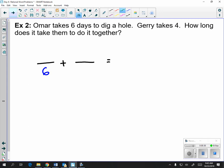Omar individually takes 6. Jerry takes 4. The problem is asking how long does it take for them to do it together. So we're solving for the numerator in this case. And we're only talking about digging one hole. So we're going to set it equal to 1. And x is going to be the number of days it takes for them to do it together.